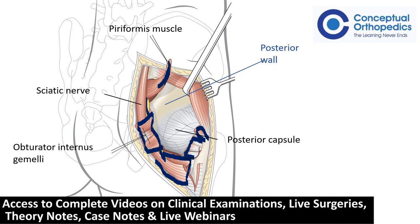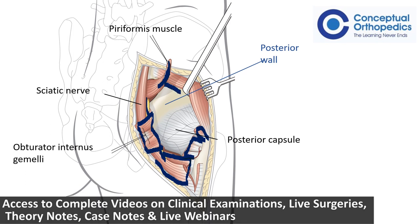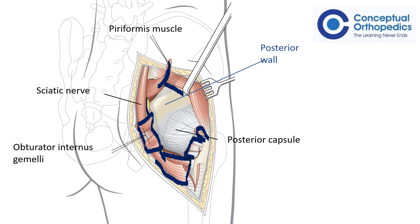Once the piriformis muscle is cut, we can see the deep gluteus minimus muscle running in the plane, which can be retracted along with the gluteus medius. After this, a direct exposure of the posterior wall and the posterior column is seen.